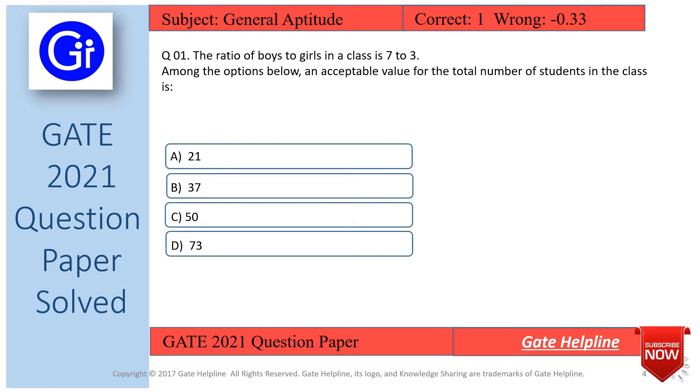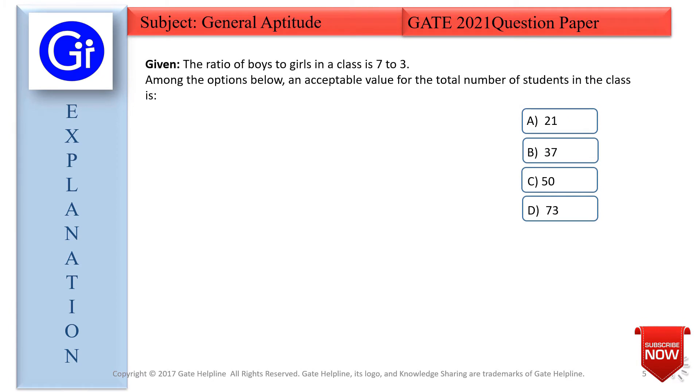Given at the GATE level, I think this was the easiest question in GATE 2021 question paper. Let's solve this. Let's start the explanation with what is given to us. Given: the ratio of boys to girls in a class is 7:3.